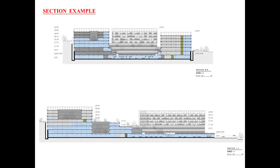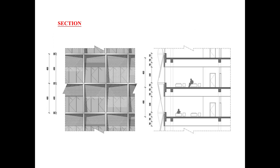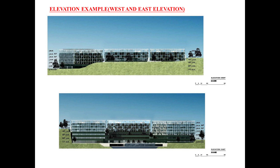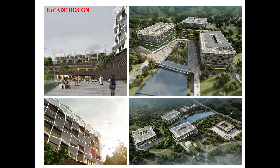This is a section example where we can look at floor height. This is a small section where we can look at exterior facade detail — the glass detail in this area. We can show elevation examples, including west and east elevations, and we can look at the facade design. The hospital has a very dynamic facade with moving glass.